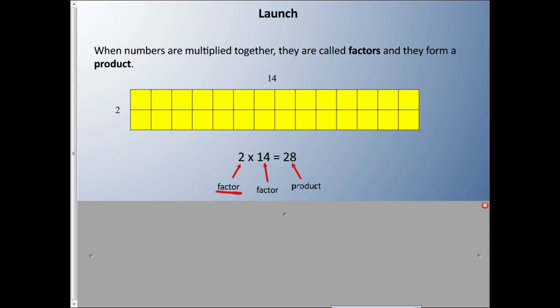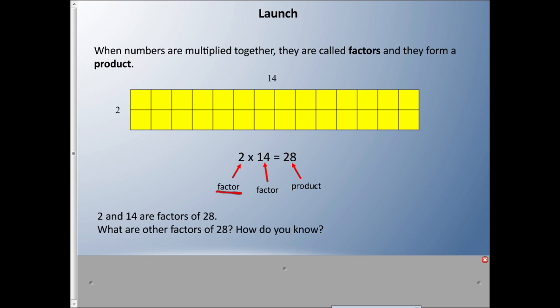Here I have a bunch of rectangles. I can see two on one side and fourteen on the other side. We could multiply 2 and 14 to get the answer 28 — there are 28 squares altogether. We call the 2 and the 14 factors, and the answer is called a product. So 2 and 14 are factors of 28. What are some other factors of 28? How do you know?